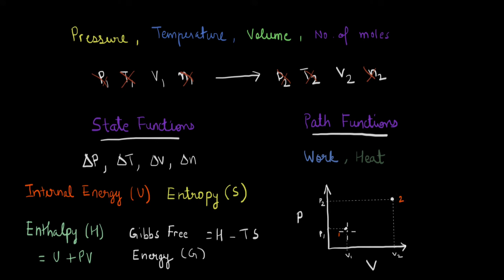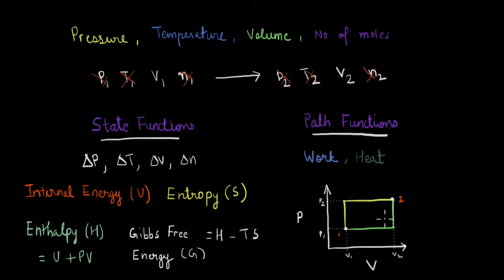I can think of two ways to get from state 1 to state 2. In the first path, I keep the volume constant at V1 and increase the pressure to P2, then increase the volume from V1 to V2. In the second path, I first increase the volume from V1 to V2, then increase the pressure. Via both paths we get from the initial state to the final state, but we took different approaches. The work done on the system as we go from 1 to 2 depends on the path, because work done on a PV diagram is the area under the curve.